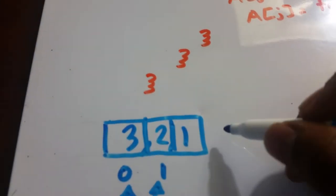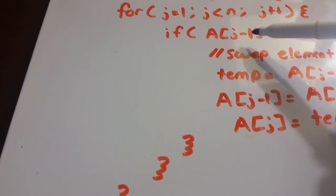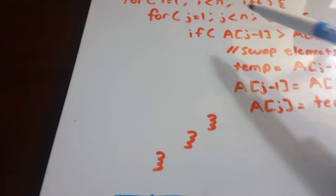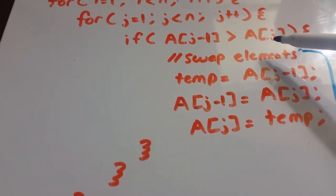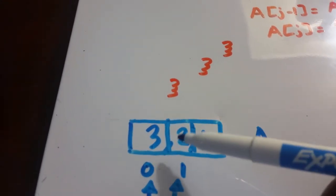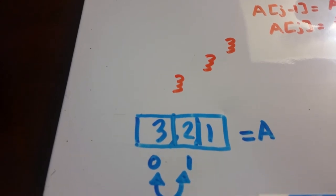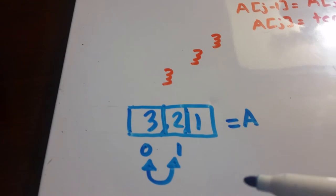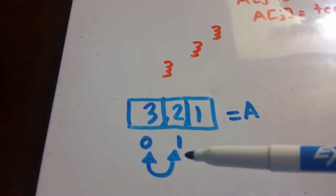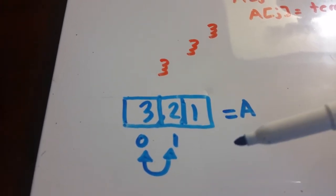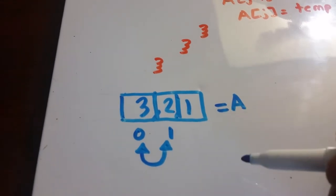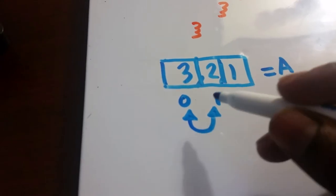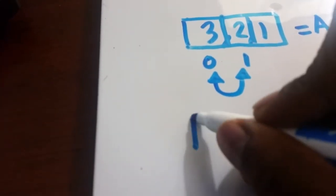This whole array is our array a. We're checking a at position j minus one — since j is one, that's position zero, which is element three — and seeing if three is greater than our next element at position j, which is position one, equal to two. So we're checking if three is greater than two, and it is. Now, right now we have a worst case scenario: our array is in the complete opposite order, descending instead of ascending. So we need to swap these two elements and we get two, three, one.